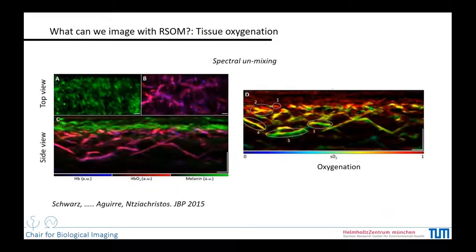We can also perform spectral unmixing. By acquiring spectral images and applying unmixing algorithms, we can get the concentration of different biomolecules — for example, the concentration of oxyhaemoglobin, deoxyhaemoglobin, and melanin. This means we can also calculate oxygenation: we can calculate the oxygenation level at the capillary level, at the microvascular level. For each microvessel, we can calculate individual oxygenation values.